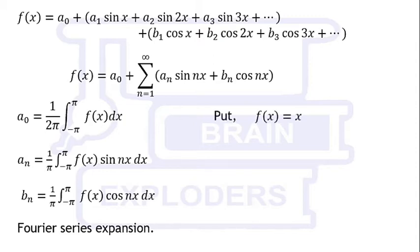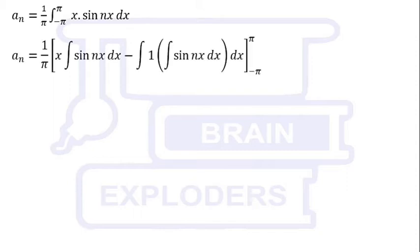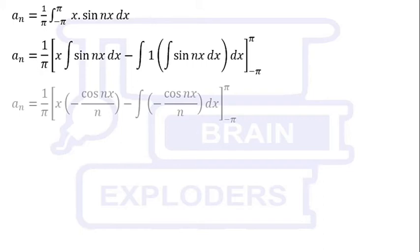Put f(x) = x. This gives the value of a₀ = 0. aₙ can be written as 1/π integration from -π to +π of x·sin(nx)dx. Apply integration by parts. Consider x as first function and sin(nx) as second function.